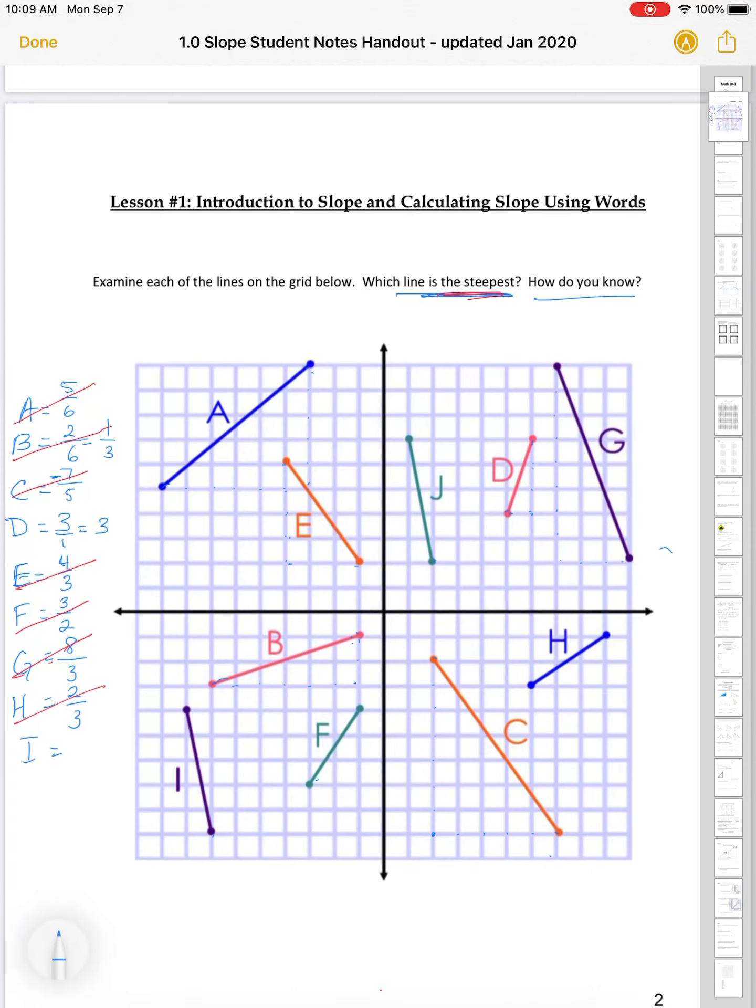H goes up 2 over 3, well, 2/3, that one can rule out, because it is less than 3. And I, well, this one looks very steep. 1, 2, 3, 4, 5 over 1. 5 over 1, which is 5. So, I, 1, 2, 3, 4, 5, is quite a bit more steep, or it is more steep than D. So, at this point, I can rule out D.